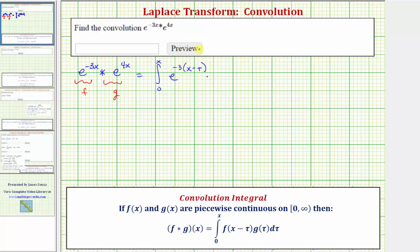Times g of tau, which should be e raised to the power of 4 tau. And we integrate with respect to tau, treating x as a constant.